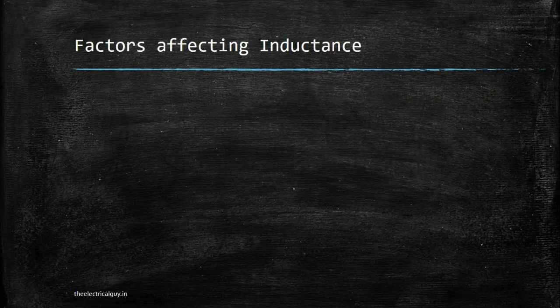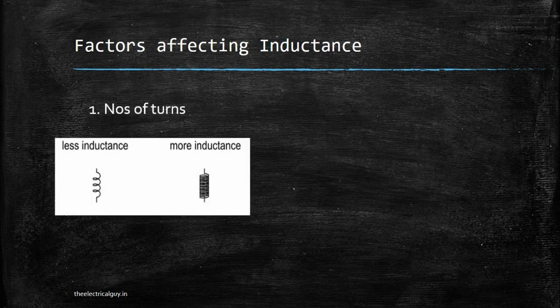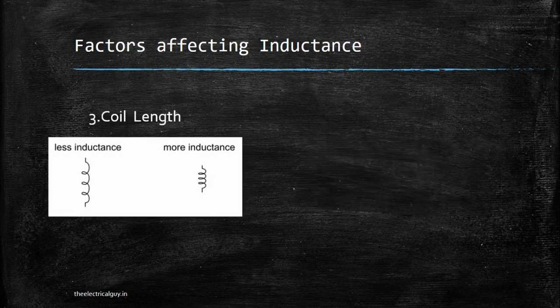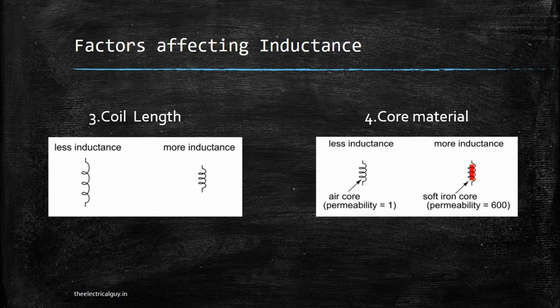Now let's see what factors affect inductance. Number one is number of turns — more turns give more inductance, fewer turns give less inductance. Second is coil area — bigger area gives more inductance, smaller area gives less. Third is coil length — here it is the opposite: more length gives less inductance, smaller length gives more inductance. Fourth is core material — less inductance with an air core, which has a permeability of one, and more inductance if you use a soft iron core. These are the four main parameters that affect inductance.